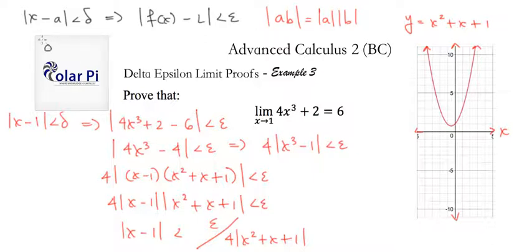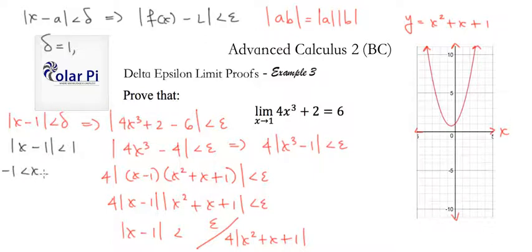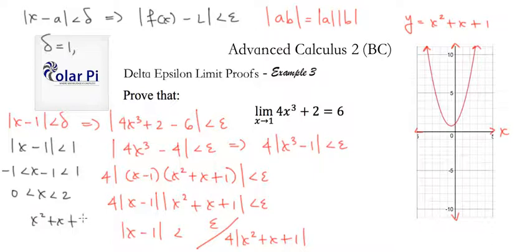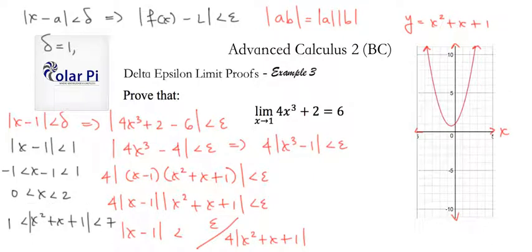We make an assumption about delta — in the previous examples I explained why this assumption makes sense, so I won't explain here. Let's say delta equals 1. Then if delta equals 1, we've narrowed down our interval along x, so we have negative 1 less than x minus 1 less than 1, which means 0 less than x less than 2. For x values like these, x squared plus x plus 1 should be less than 7 and greater than 1.